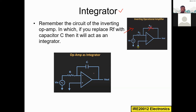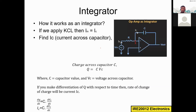When the feedback resistor is replaced with a capacitor, this circuit is called an integrator. This is the standard circuit design of the integrator. To remember it, just recall the inverting operational amplifier and replace one component — the feedback resistor — with a capacitor. The circuit then becomes an integrator. Now we will see how this integrator circuit works.